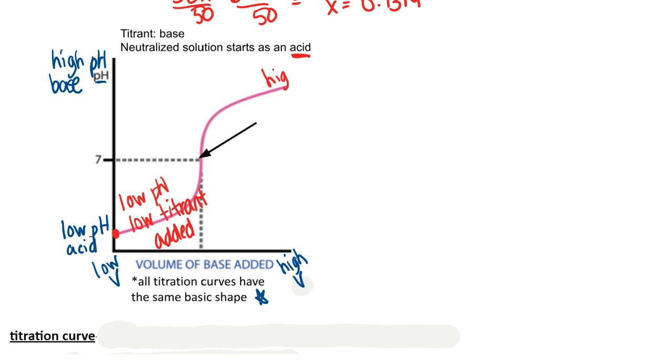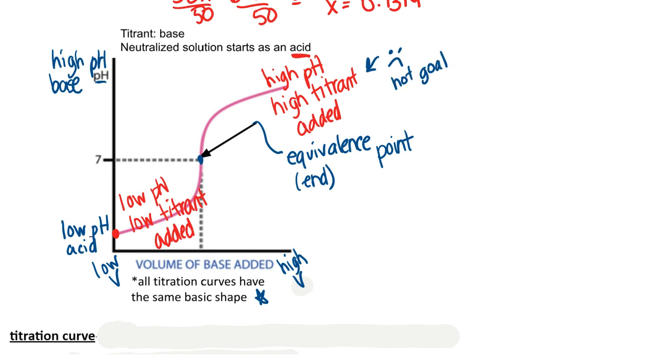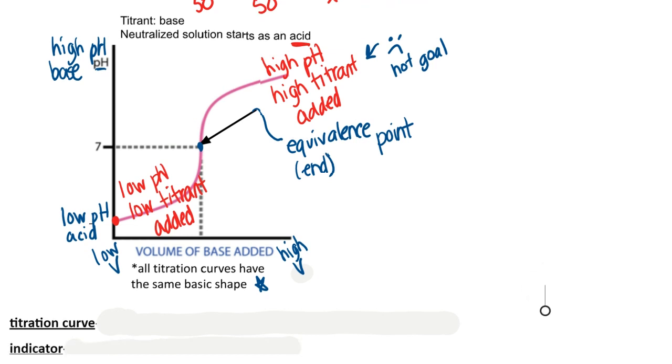So over here it's a really high pH. What that means is that I added a high amount of titrant, but that's not actually the goal. The goal of a titration is to achieve this point right here. This is called the equivalence or you could also say the end point. What I want is a perfectly neutral solution. So over here this is bad, this is not the goal. What I want is to achieve a perfectly neutral solution in my beaker. That's going to help me get the most accurate molarity of my unknown.